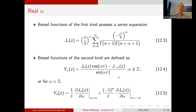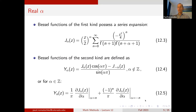In the special case where α is an integer, one uses a limiting procedure such that Y_n of integer order n is given by a derivative with respect to order of J_α plus (−1)^n times the derivative of the Bessel function evaluated at −n.